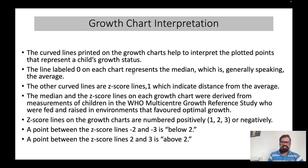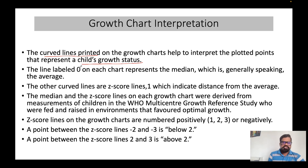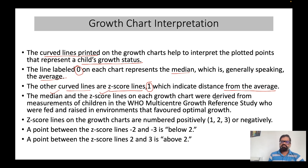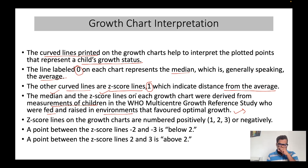A growth chart has different curved lines printed on it. When you plot weight-for-age, height-for-age, or weight-for-height, it represents the child's growth status over a period of time. The line labeled zero is the median, which is the average, and the other curved lines are z-score lines. One z-score indicates the distance from the average. These median and z-score lines have been derived from measurements of children in the WHO Multi-Centric Growth Reference Study, who were fed and raised in an environment that favored optimal growth.